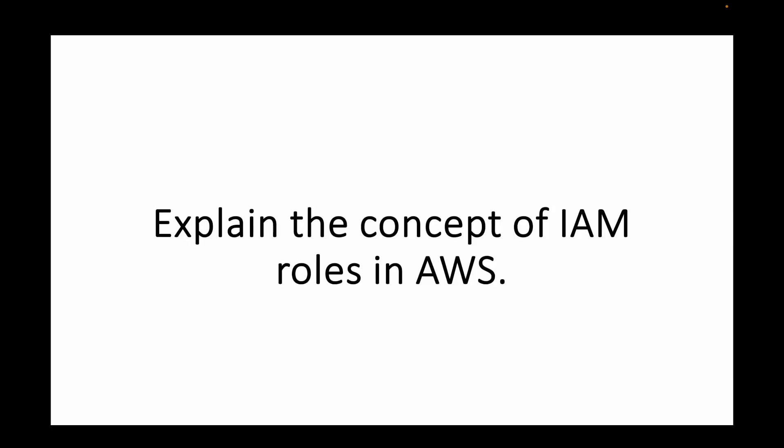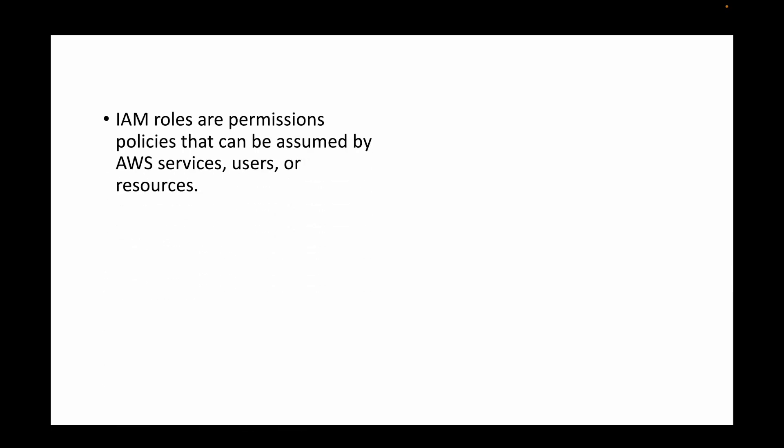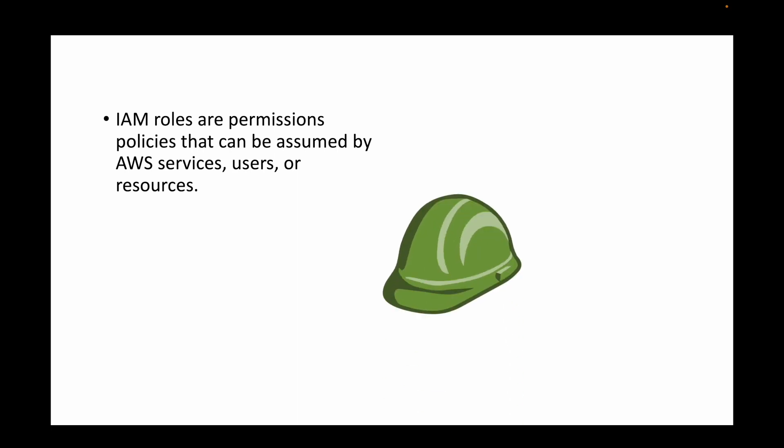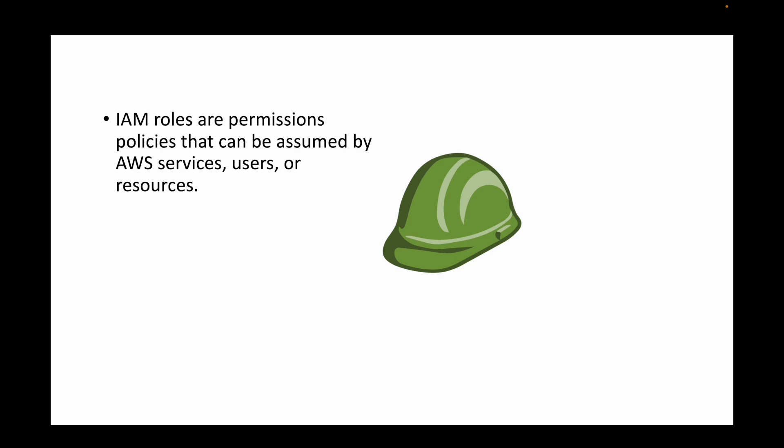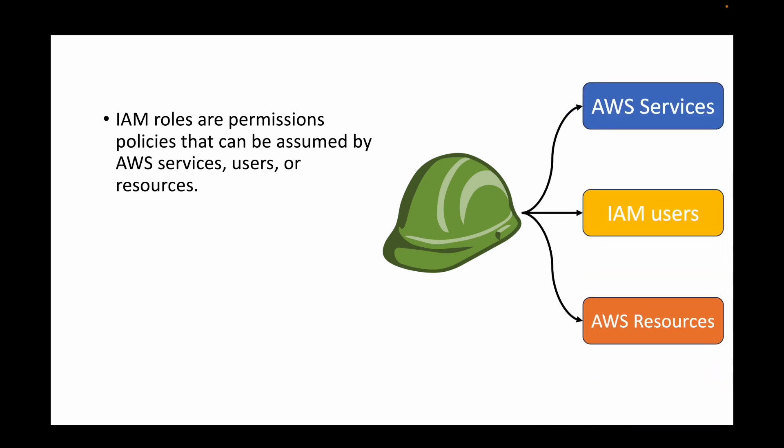The next question is: explain the concept of IAM roles in AWS. In IAM, we have two ways to give access — IAM users and IAM roles. IAM users are users you create when you want to share your account with other people. IAM roles are permissions that can be assumed by other services, users, or resources.